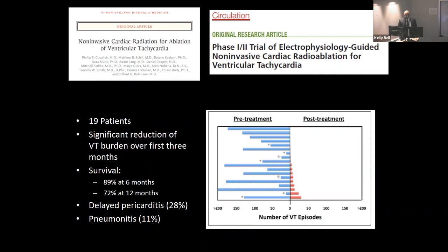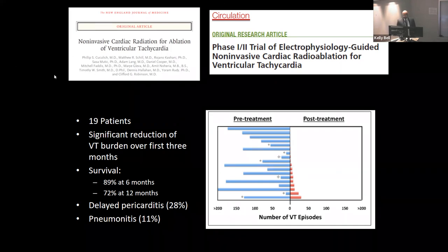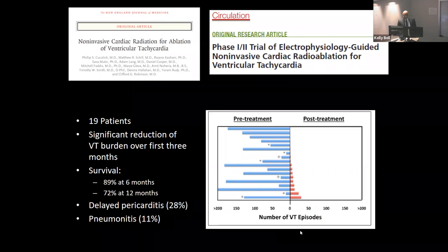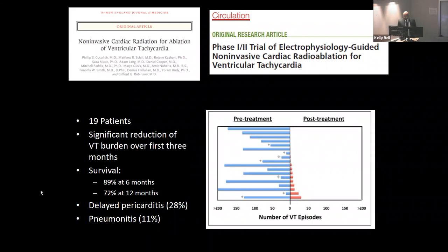In the last 10 to 12 years, people asked: our oncology colleagues deliver radiation to get rid of tumors — what if we radiate the scar? Would that change its characteristics and get rid of ventricular tachycardia? The group most ahead of this is the WashU group in St. Louis — Philip Kuklitch (EP doctor) and Cliff Robinson (radiation oncologist). They initially published on five patients and subsequently on 19 patients — similarly sick patients who had prior ablation and were still having VT on antiarrhythmics. The results were impressive: a reduction in VT episodes, with survival about 72% at 12 months, which is expected for this group. There were no major complications; some had pericarditis and pneumonitis, which is not unusual with radiation therapy.